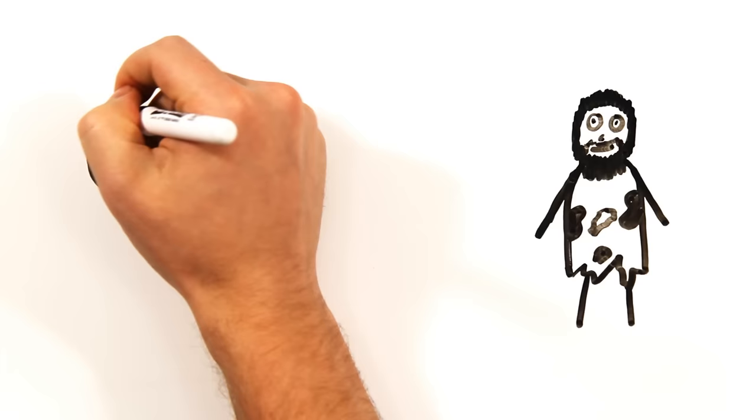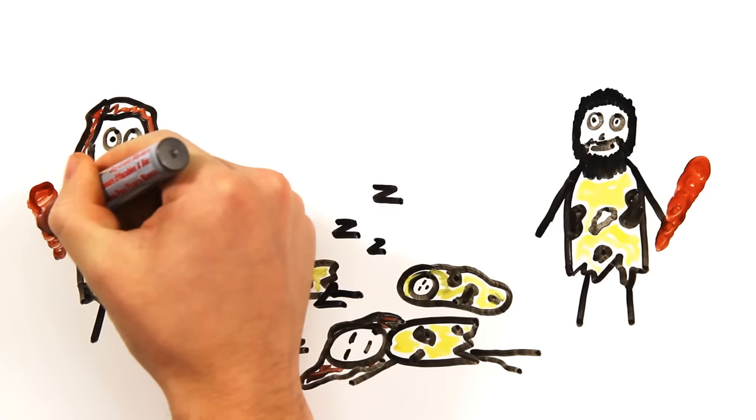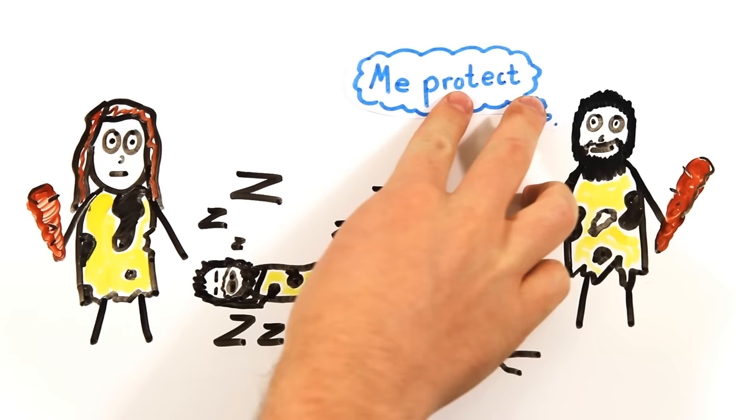Having individuals with varying sleeping patterns would allow for better protection of a group throughout the day and night. Instead of everybody sleeping at one time, some people naturally stay up later and some wake up earlier aware of threats or predators while others sleep.